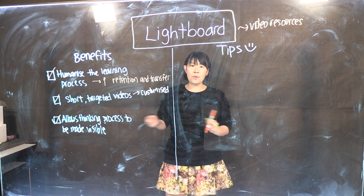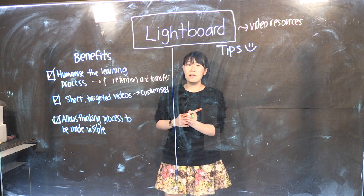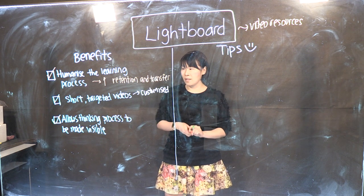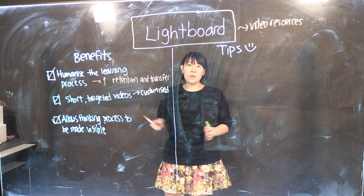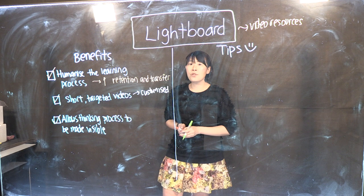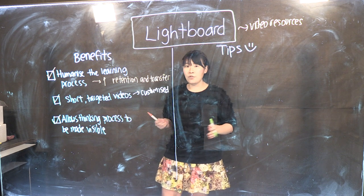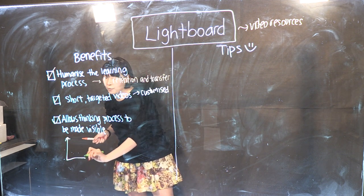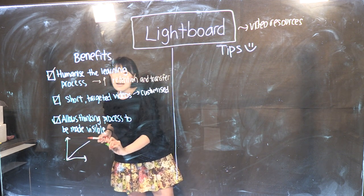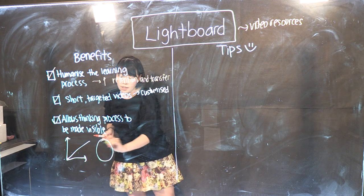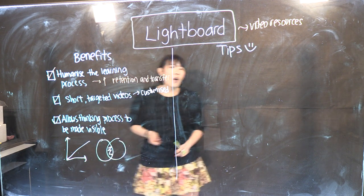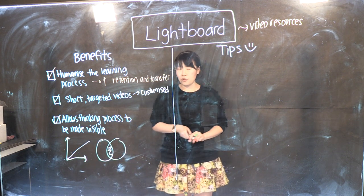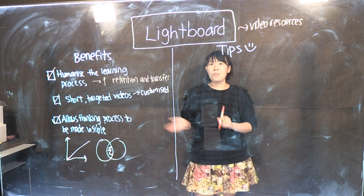For example, the thinking process in solving solutions to particular problems. Not only that, the light board allows one to make illustrations as well as drawings — one can draw graphs, highlight key elements, or draw diagrams on it.